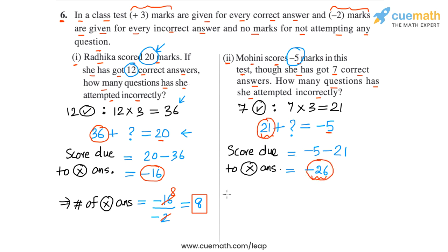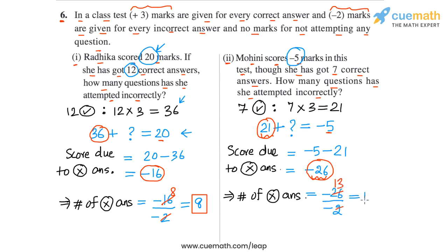Now let's calculate the number of incorrect answers. The number of incorrect answers equals the total score due to incorrect answers, which is minus 26, divided by the score per incorrect answer, which is minus 2. The dividend and divisor are both negative, so the quotient is positive. 26 divided by 2 is 13. So for Part 2, the answer is that Mohini attempted 13 questions incorrectly.